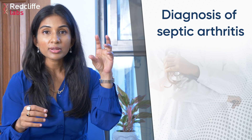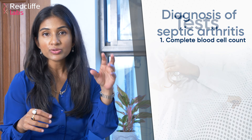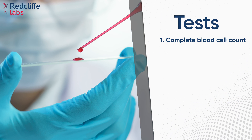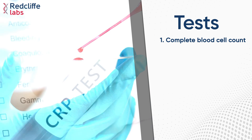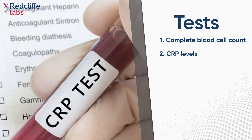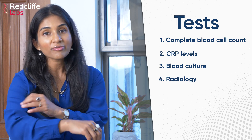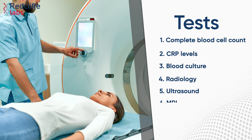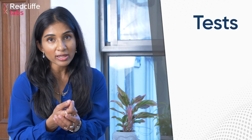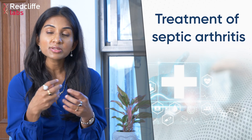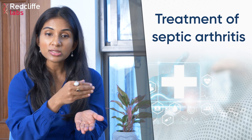Coming to the diagnosis, blood parameters will help. CBC will show an increase in the WBC count, and there will be elevated CRP as well as blood cultures which can help. Radiology of the affected part — ultrasound and MRI — are the other tests which help in localizing which joint is involved and how much it is affected.